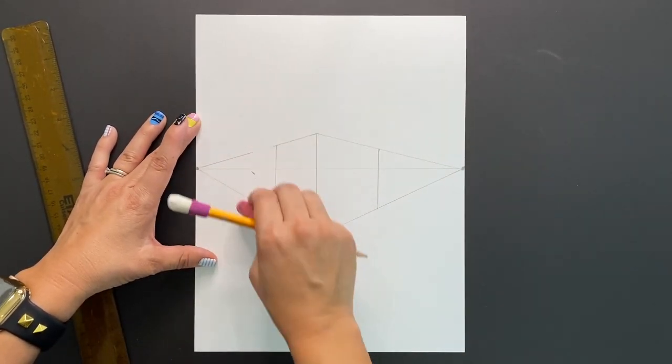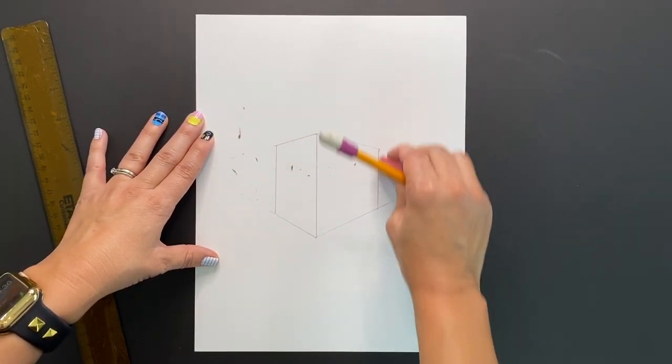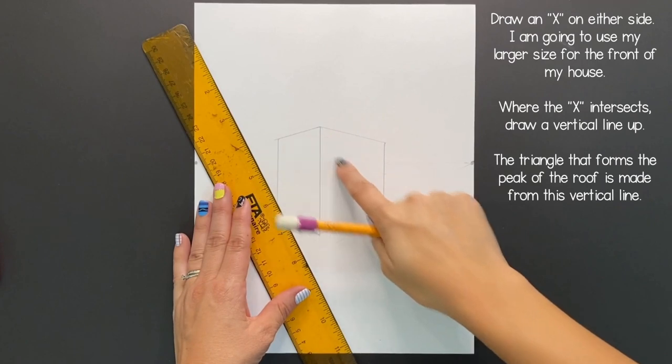Next grab your eraser and we're now going to erase our horizon line as well as all of the other lines that were going to our vanishing point.